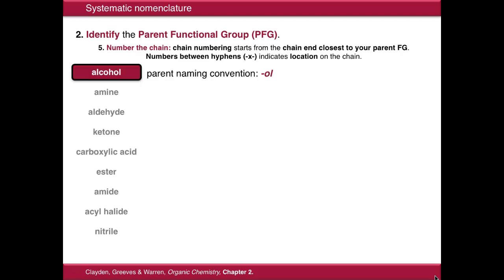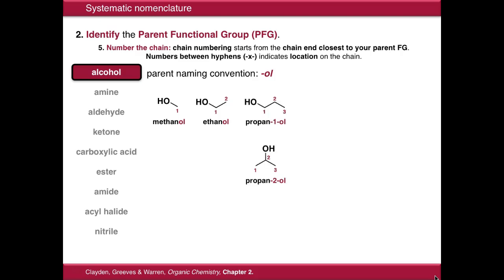If we start with alcohol, the naming convention for alcohols is to end the name of the molecule with -ol. The two simplest alcohols are methanol and ethanol, which are one carbon and two carbons respectively. As soon as we move to propanol, we now have two choices — two isomers of propanol. We can have propan-1-ol, where the alcohol group is connected at carbon number one, or we can have propan-2-ol, also called isopropanol, where the alcohol group is connected at carbon number two. These are two distinct molecules.